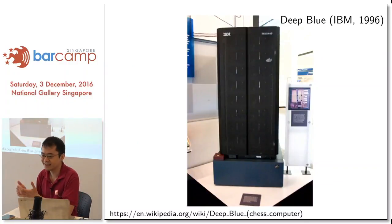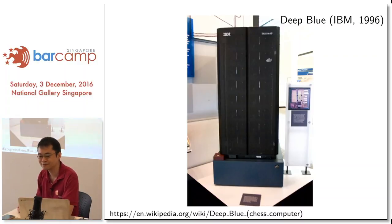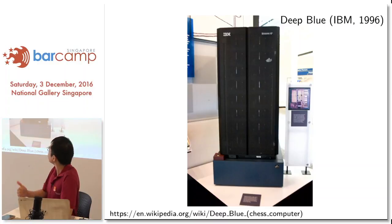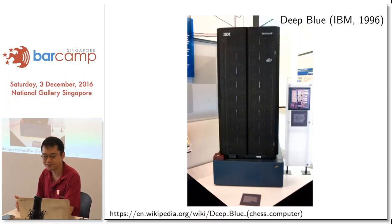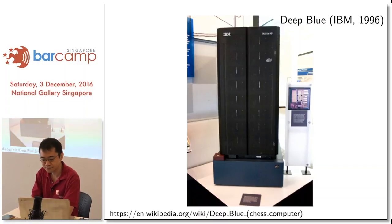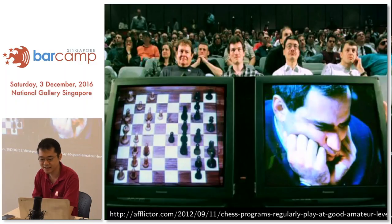One of the early, fairly famous or well-publicized events was Deep Blue versus Kasparov. This is what Deep Blue looks like — it's actually not a very big machine. It was built by IBM in 1996, and then the famous match happened.